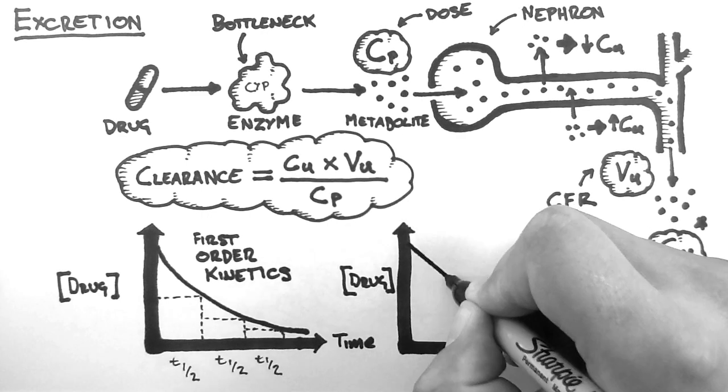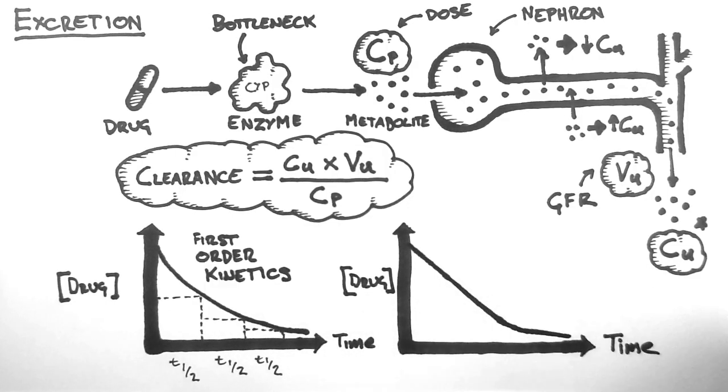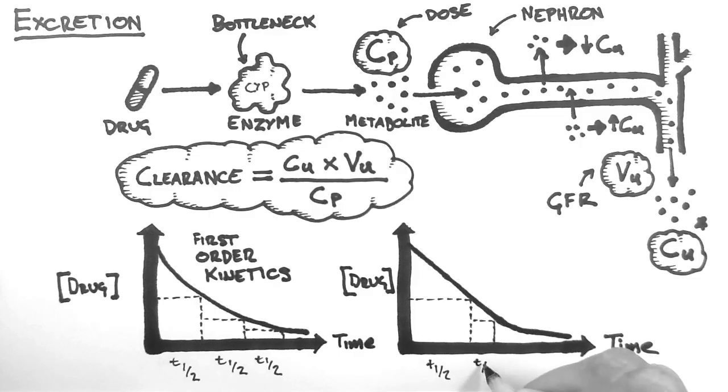Hence, we end up with a linear graph like this. Note that in this case, the half-life is not a constant value anymore. It is dependent on the current concentration of the drug.